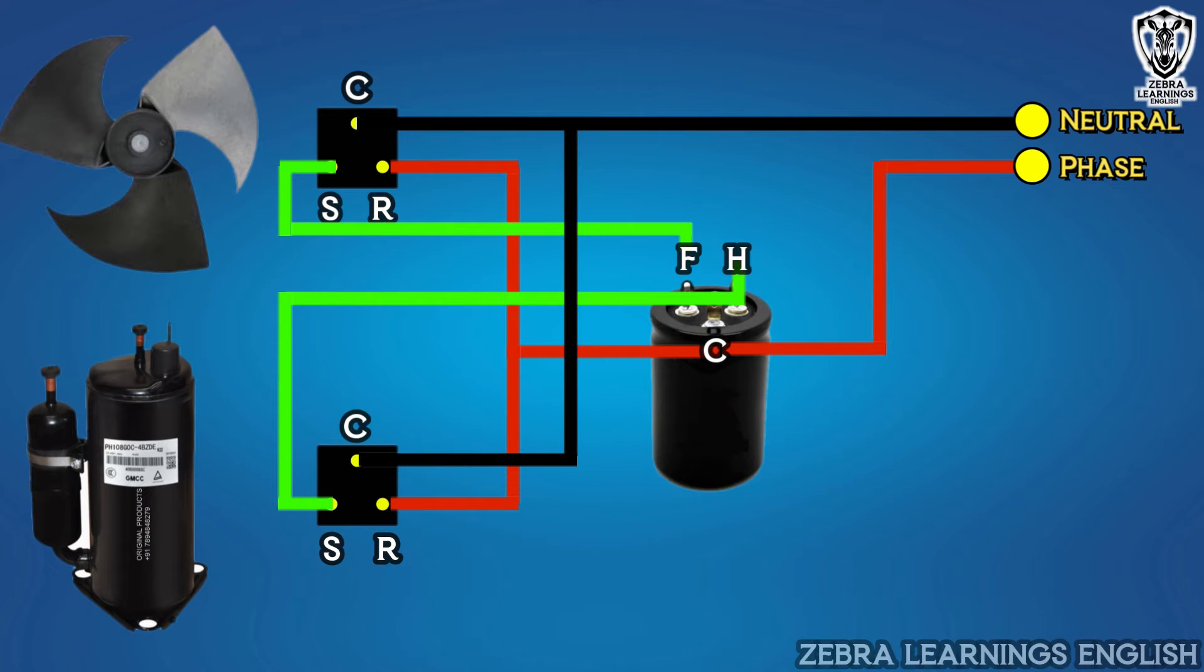After receiving the signal from the indoor unit to the outdoor unit, the capacitor sends charges to the compressor through the herm terminal, and to the fan motor through the fan terminal.